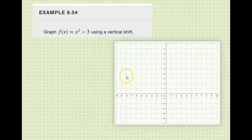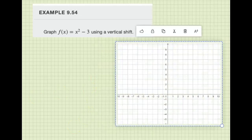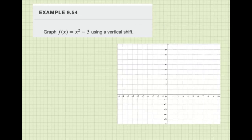Hello everyone and welcome to this example. We're going to graph f(x) = x² - 3 using a vertical shift. Let's see what happens when you subtract 3 from the basic x² function.